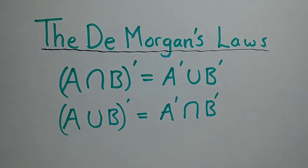Hi everyone. In today's video I want to prove De Morgan's Law. De Morgan's Law can be in two forms: either (A∩B)' = A'∪B', or (A∪B)' = A'∩B'. I'll show you how to prove both of these when given a question to verify the law of De Morgan's. Let's jump straight into it.